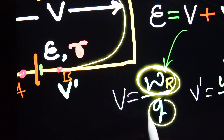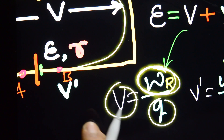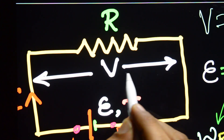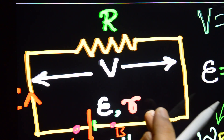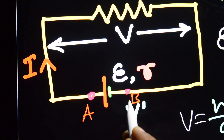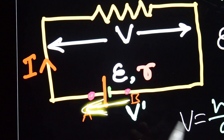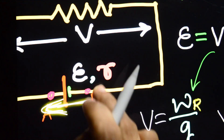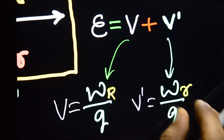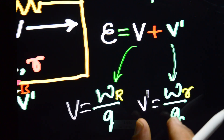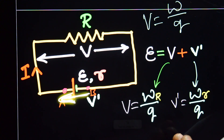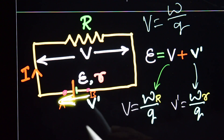W_R divided by Q equals V — that is the terminal potential difference, or potential difference across the resistor R. And the potential difference across the internal resistor is W_r divided by Q, which is V dash — the potential difference across the internal resistor r.